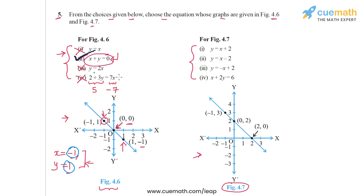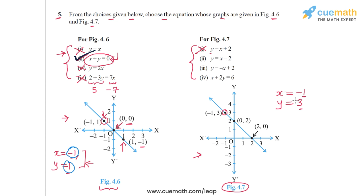Now let's do the same thing for figure 4.7. The first point that we have is minus 1 comma 3, so x is equal to minus 1 and y is equal to 3. The first equation is y equal to x plus 2. If x is minus 1, then x plus 2 will be 1, but y is 3, so the first equation is not satisfied. The second equation is y equal to x minus 2. If x is minus 1, then x minus 2 will be minus 3, but y is 3, so the second equation is also not satisfied.